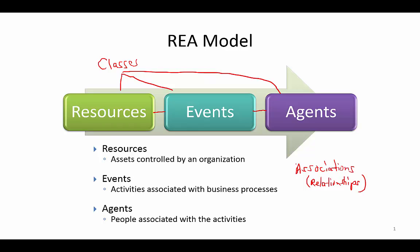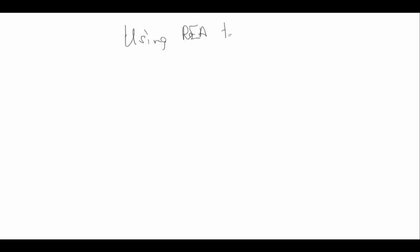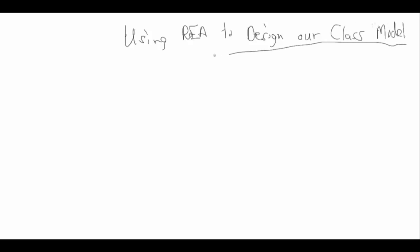The associations basically describe our relationships. We've got classes — resources, events, and agents — and we've got associations. One last thing to keep in mind is that events can actually be related to themselves, so we can have associations between events. We use REA to design our class model and then our database.